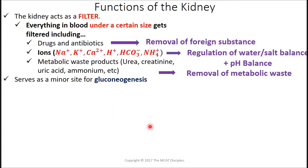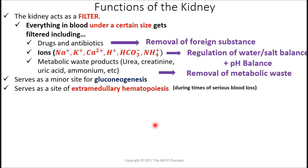The kidney also serves as a minor site for gluconeogenesis. Under conditions of very low glucose, it serves as a site for gluconeogenesis. The other site is the liver — the only two organs in the body that can undergo gluconeogenesis are the kidney and the liver, because they have all the enzymes required. The kidney also serves as a site for extramedullary hematopoiesis, which only occurs in times of serious blood loss. Normally, hematopoiesis occurs at the bone marrow.